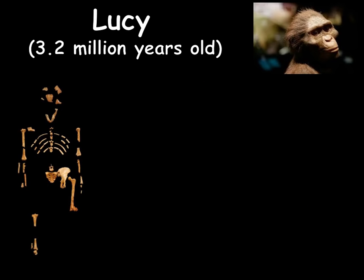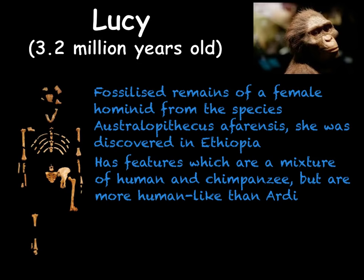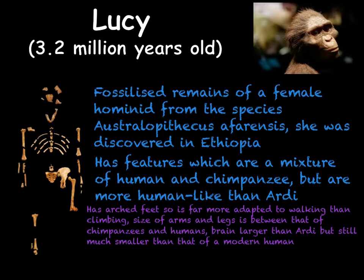The second fossilised remains you need to know about are those of Lucy, a fossil of the species Australopithecus afarensis. Again the fossilised remains are of a female, found in Ethiopia and believed to date from 3.2 million years ago. Unlike Ardy, Lucy has arched feet, meaning she is far more adapted to walking than climbing and no longer has that ape-like big toe. The size of her arms and legs were between what you would find in chimpanzees and humans — her legs are starting to get longer and her arms shorter. Her brain is slightly larger than Ardy's but still very similar to a chimp's brain, though it is starting to get larger.